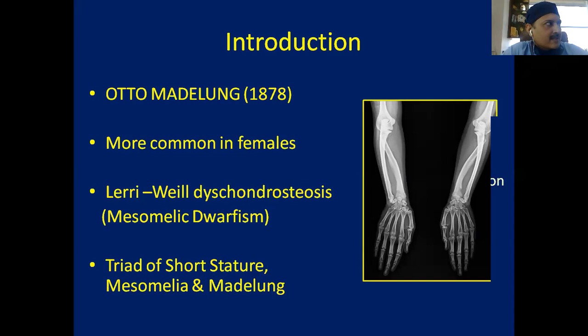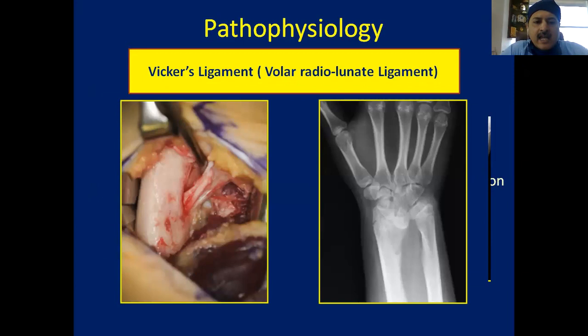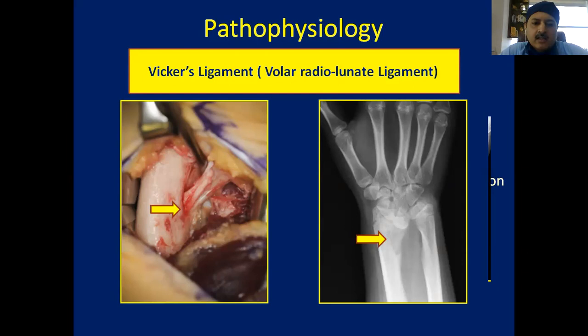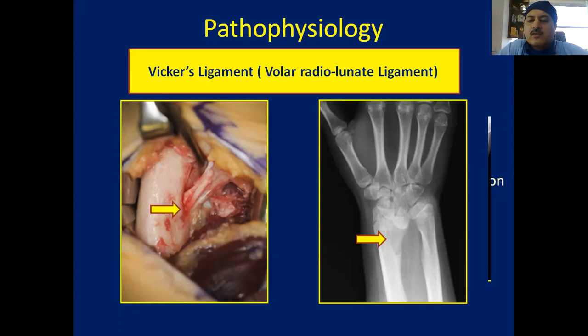It's a triad of short stature, mesomelia, and Madelung deformity — when these three things exist together, this makes Leri-Weill dyschondrosteosis. The key pathophysiology is an abnormal or tight volar radio-lunate ligament (Vickers ligament). A pathognomonic sign of Madelung is a depression on the distal ulnar side of the radius where the Vickers ligament inserts, clearly visible on X-ray and distinguishing true Madelung from Madelung-like deformities.